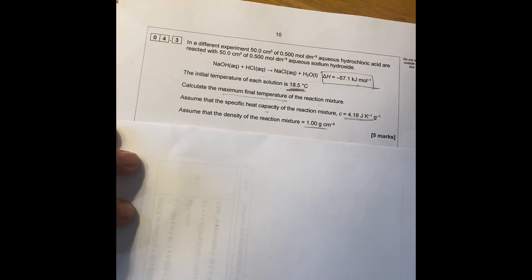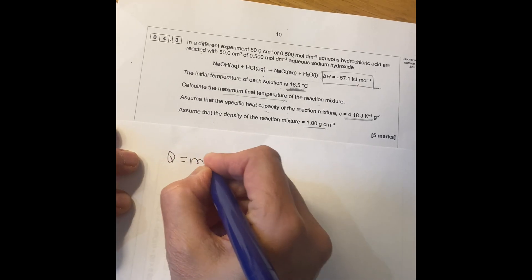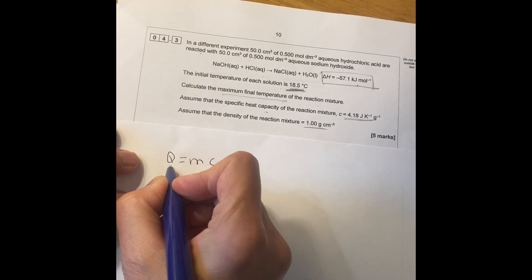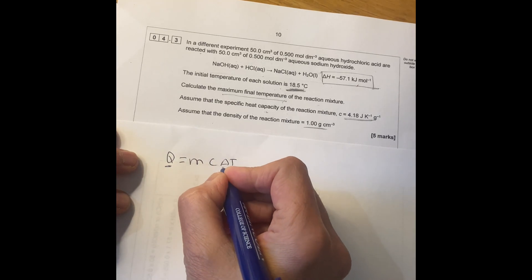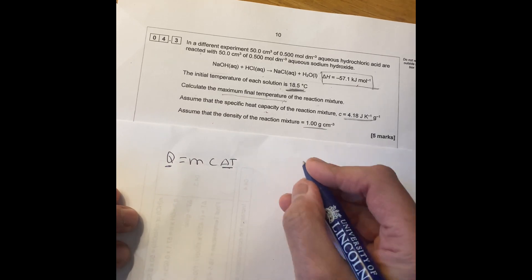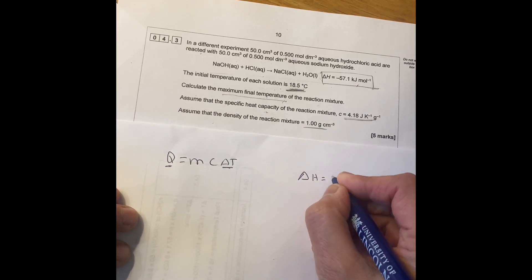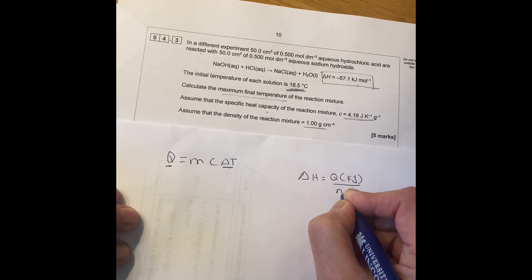So the first thing you need to do is you put Q equals MC delta T. But we don't have Q and we don't have the temperature change because we want to find out what's the final temperature. So we work out Q now by using this formula delta H equals to Q in kilojoules divided by moles.